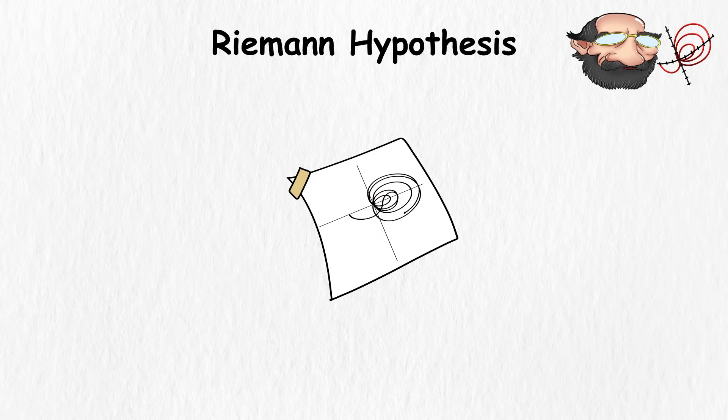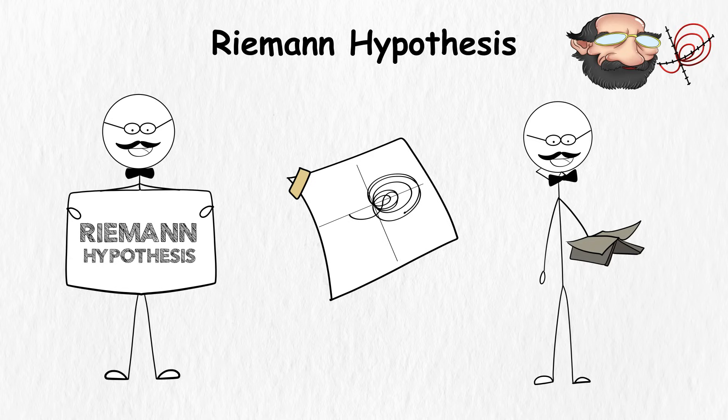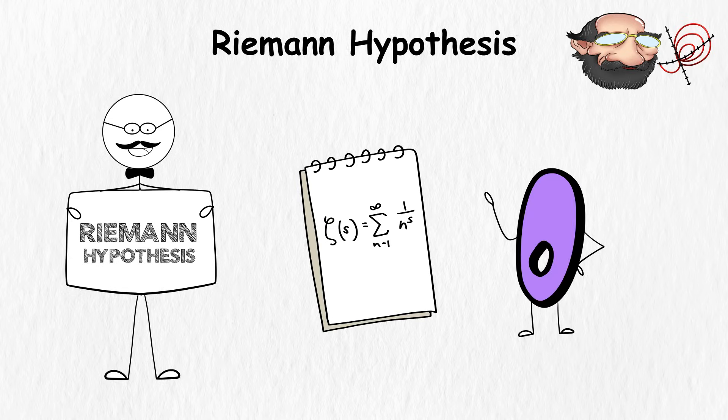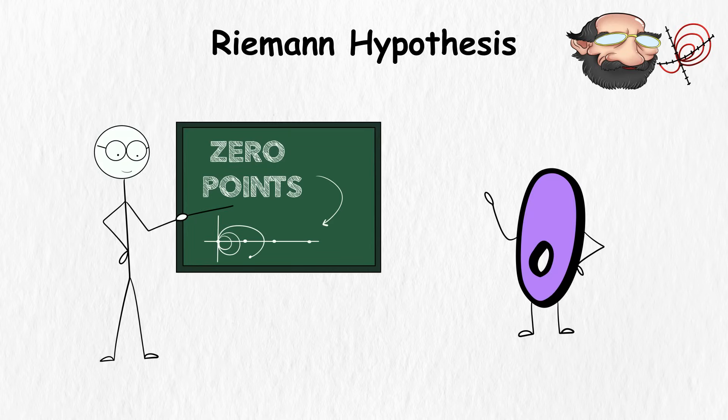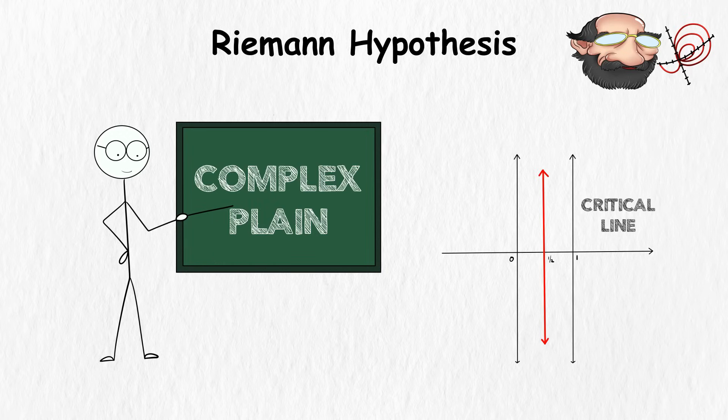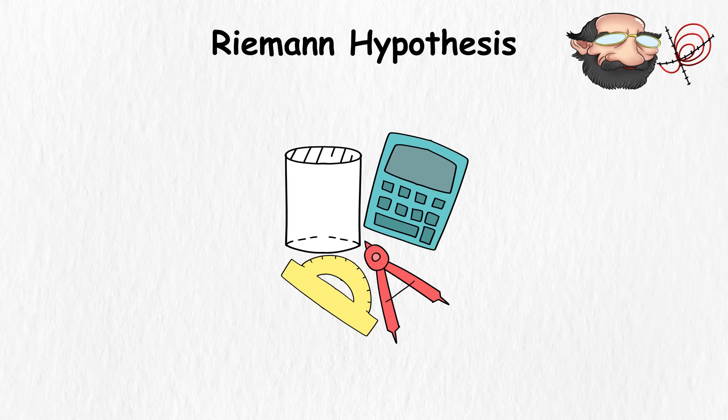He made a bold guess known as the Riemann hypothesis. He suggested that if you peek at where the zeta function hits zero, called the zero points, they all obediently line up on this invisible dance floor called the critical line in a mystical dimension known as the complex plane.